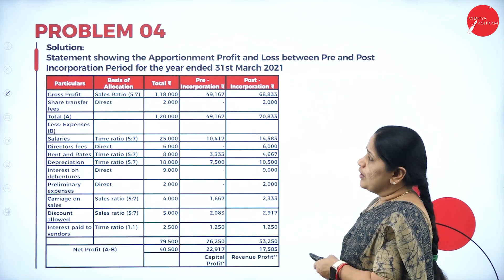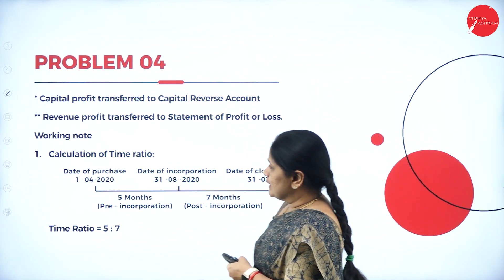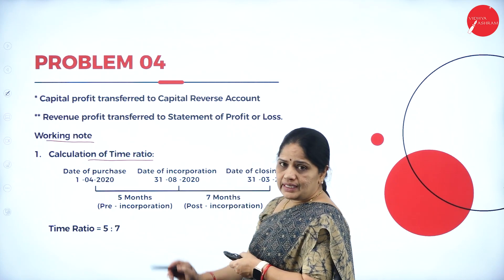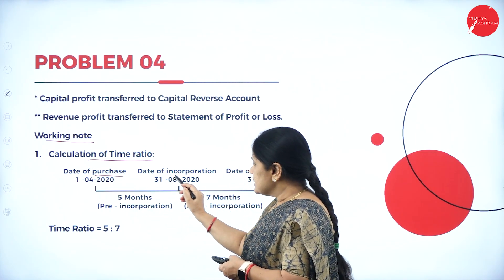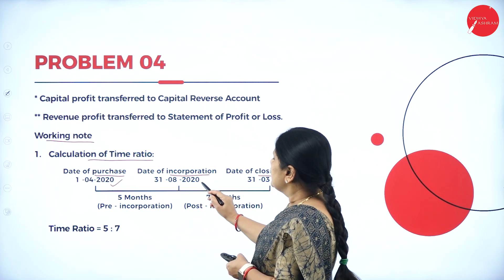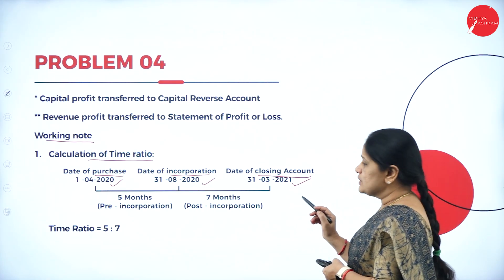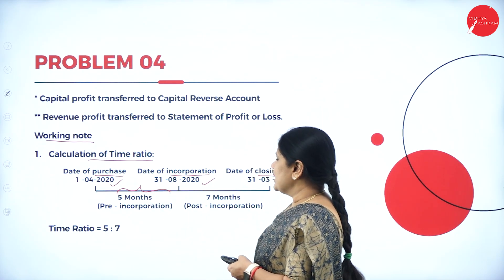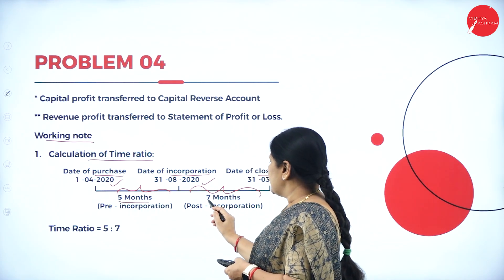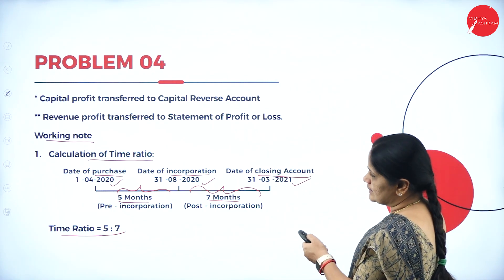Before looking into the format, let us look at the working note for the calculation of time ratio. We have three important dates: the date of purchase is 1-4-2020, the date of incorporation is 31-8-2020, and the date of closing the account is 31-3-2021. The pre-incorporation period is 5 months and the post-incorporation period is 7 months, giving a time ratio of 5 is to 7.